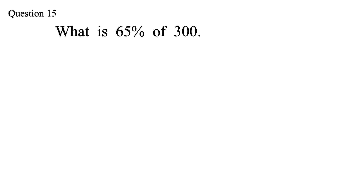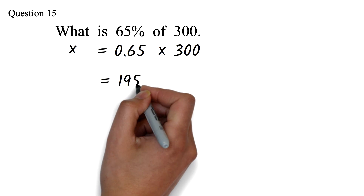Question 15: What is 65% of 300? We use the word problem translation method. 'What' is what we are looking for, represented by x. 'Is' means equal to. 65% is 65 over 100, which is 0.65 in decimal form. 'Of' in math means multiplication. So the question becomes 0.65 times 300. Computing on the calculator gives 195 as our answer.